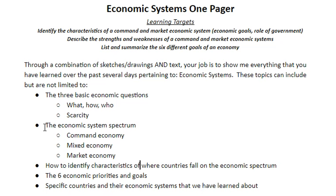Everything is a mixed economic system. Some of them, like Australia and the United States, are more on the market side. Some of them, like France, are a little bit more in the middle but more on the market side. Some of them, like China, are more on the command side but still have a little bit of freedom. And then some of them, like North Korea, are very much almost entirely on the command side. But it ebbs, it flows — it sways like a willow tree.